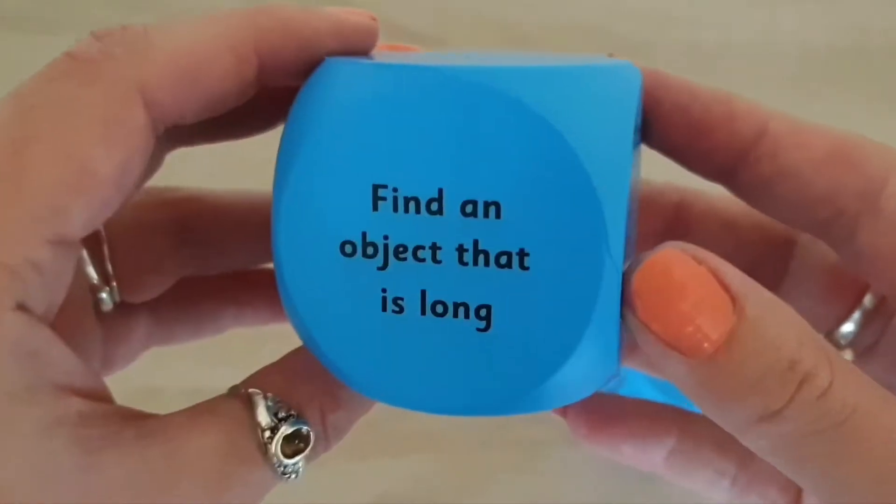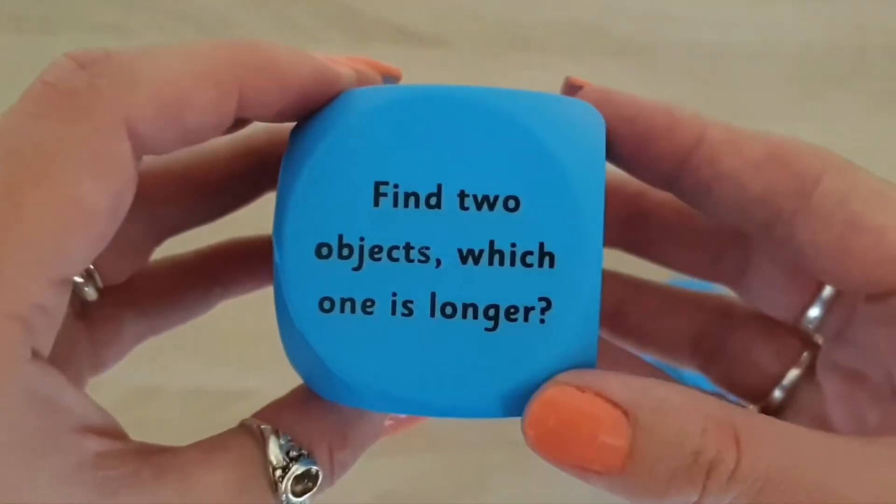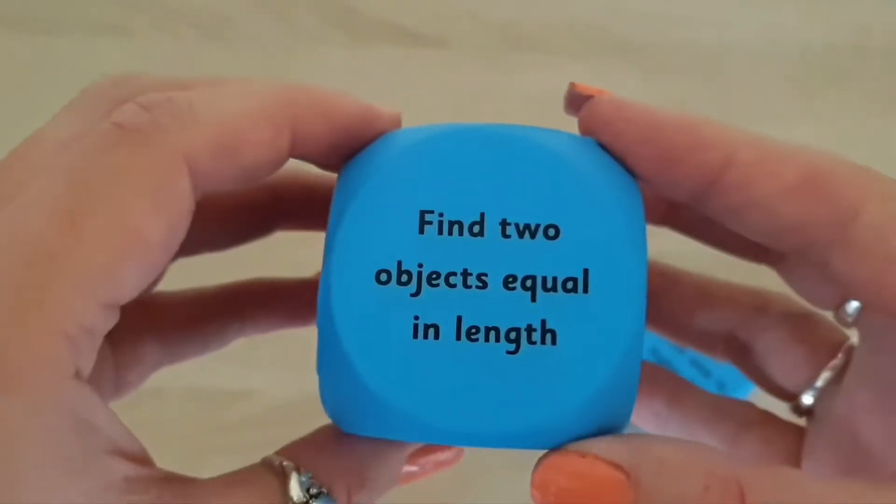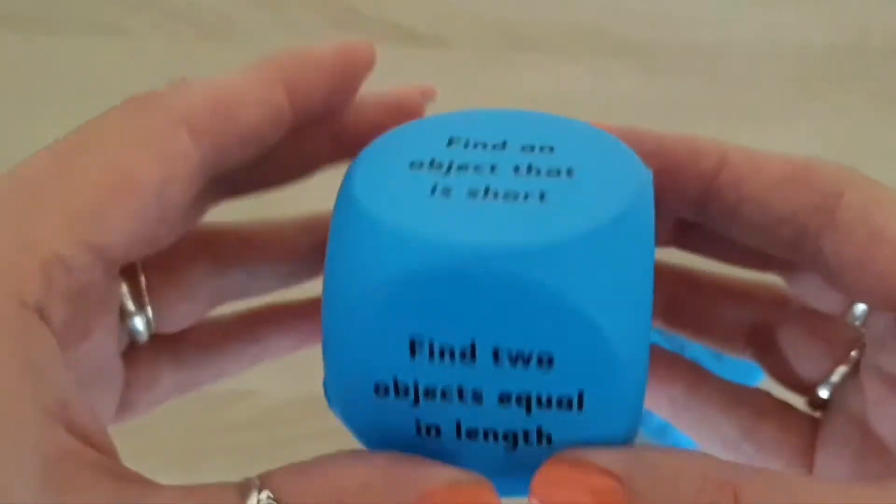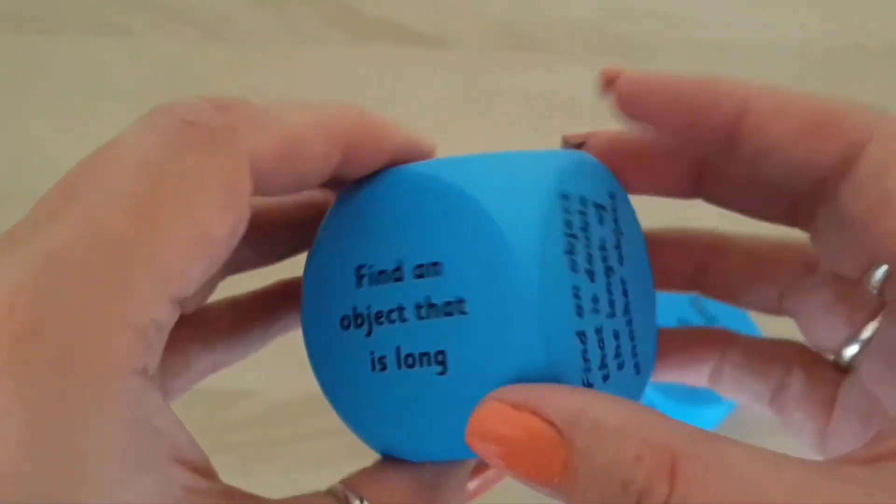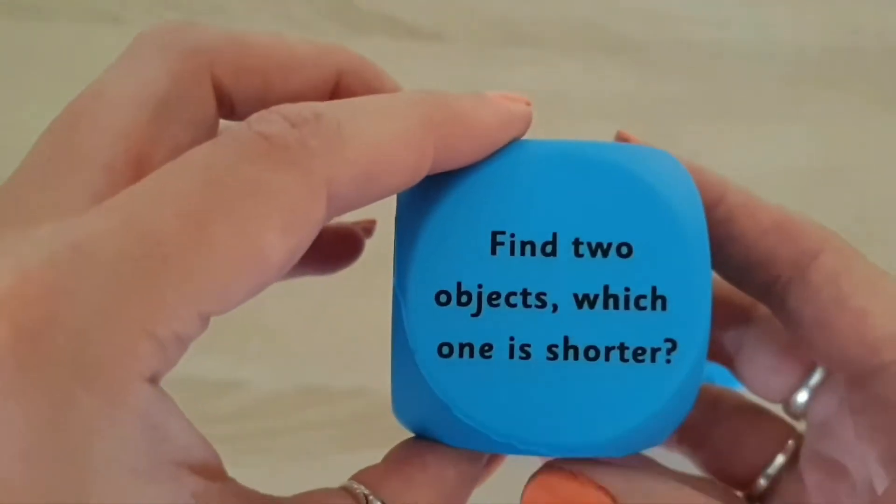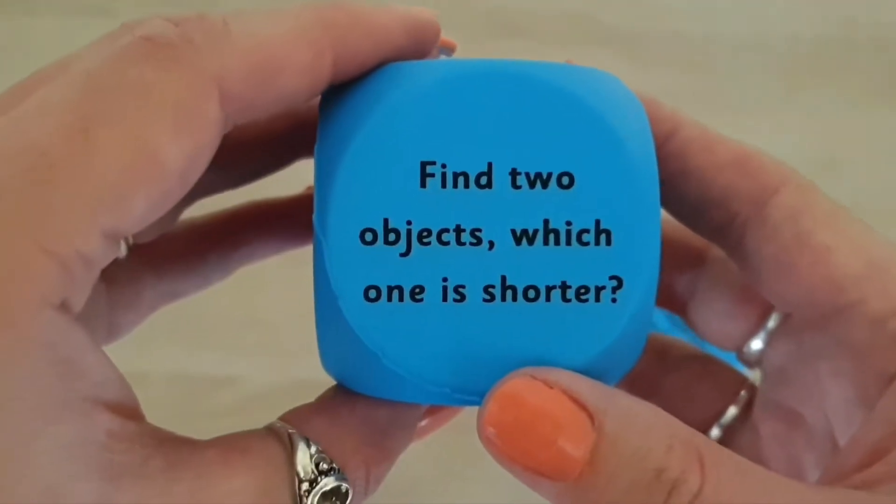And then on this one, which is all about length, we have find an object that is long, find two objects which one is longer, find two objects equal in length, find an object that is short, find an object that is long, find an object that is double the length of another object, find two objects which one is shorter.